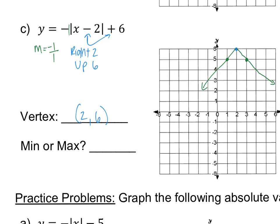Now this time, notice that the vertex is at the top of the V, the peak of the V shape. Because it's on the peak, this is actually going to be a max because it's the highest point on our graph.